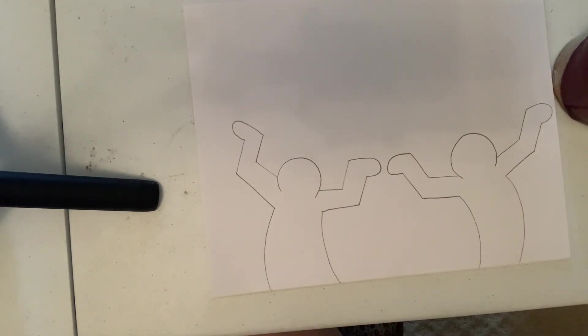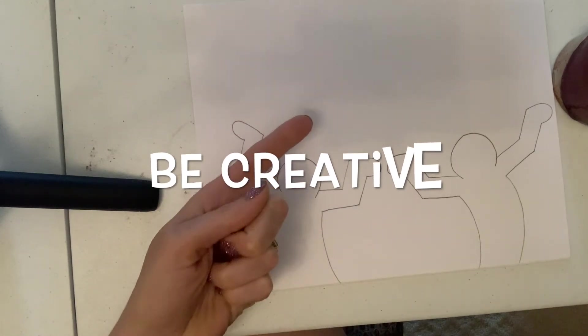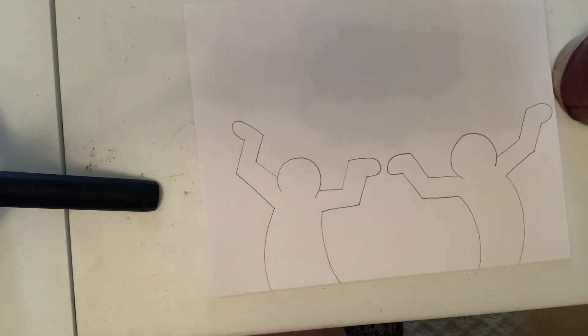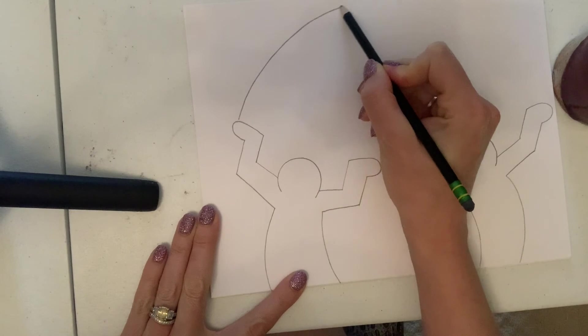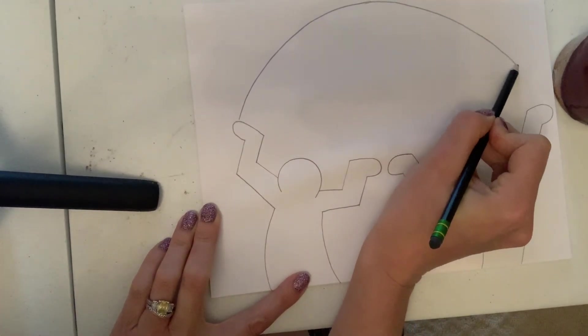Now for the next part you can draw whatever you want up here. It could be a heart. It could be a rainbow. I think today I'm going to draw a rainbow. I'm going to draw it going up and over from one hand to the other hand.